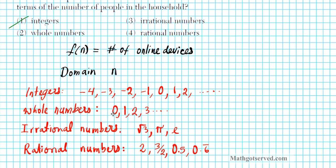Whole numbers: can you have 0 people in a house, 1, 2, 3? Absolutely. The answer is option number 2, whole numbers. If you look at irrational and rational numbers, you cannot have root 3 number of people in a household, and half a person makes no sense either. So the only set of numbers that can represent the number of people is whole numbers.